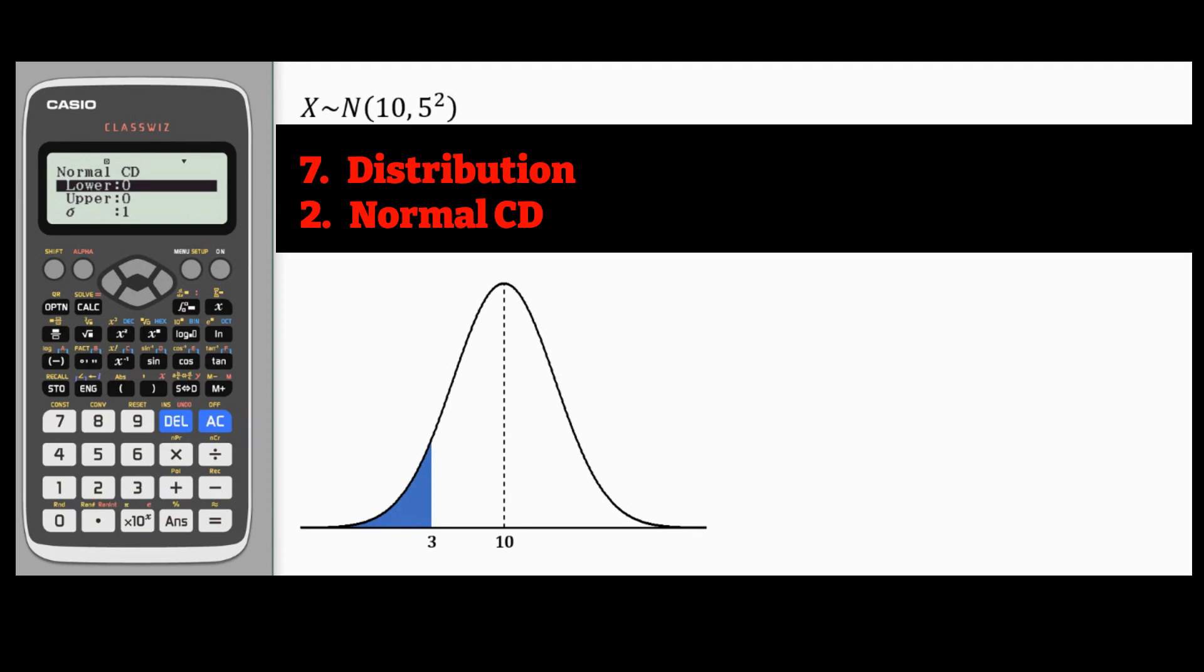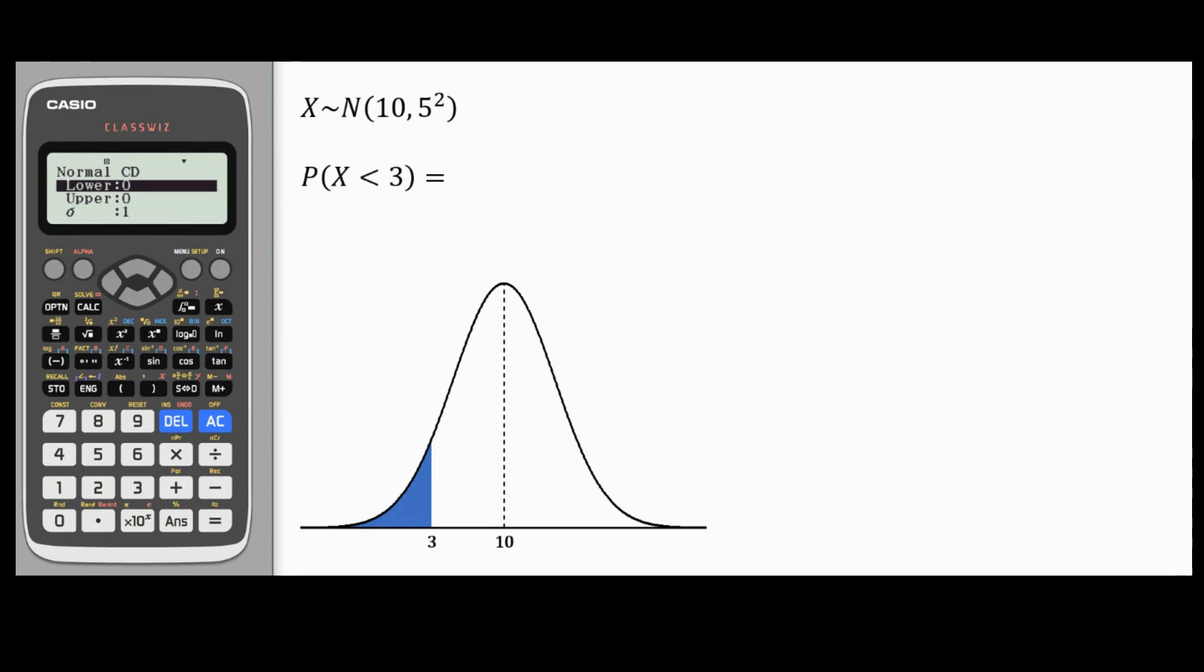The normal CND function needs four inputs: the lower, upper, Sigma, and Mu. Sigma and Mu are the same as before. Sigma is the standard deviation, which is the square root of the second number in the bracket, in our case 5. And then Mu is the first number, which is 10.